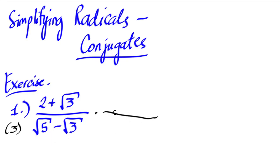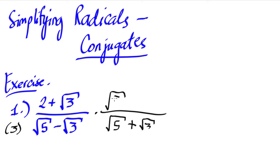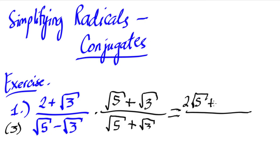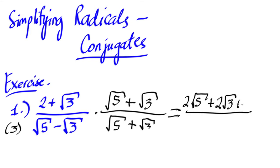We're going to multiply it by its conjugate, which is square root of five plus square root of three. We copy that in the numerator and denominator. Using the FOIL method: the first term — two times square root of five — gives us two square root of five. The outer term — two times square root of three — gives us plus two square root of three. The inner term — square root of three times square root of five — gives us square root of 15.